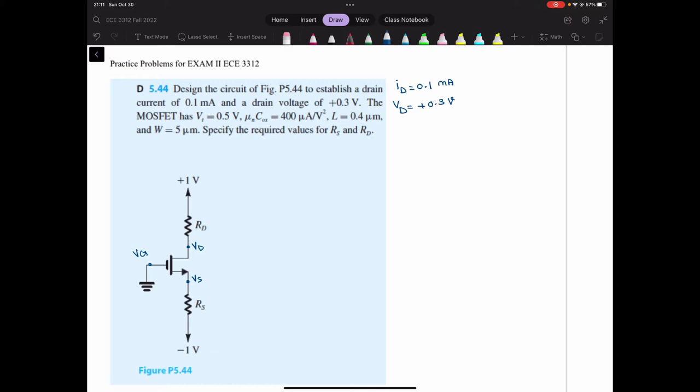So in the N channel MOSFET, if VDG is less than or equal to VTN, then we are in the saturation region. Now let's see if this equation holds for this case. So VD minus VG equals VD is 0.3. VG is 0 because it's connected to the ground. Is this less than or equal to 0.5, which is VTN? Yes. So we are in saturation region.